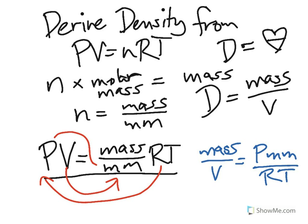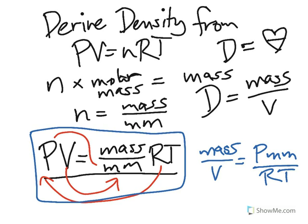And that's it. That's how to derive density from the ideal gas equation. Through this algebraic manipulation, we can derive the density, which is mass divided by the volume, equal to pressure times the molar mass divided by RT.